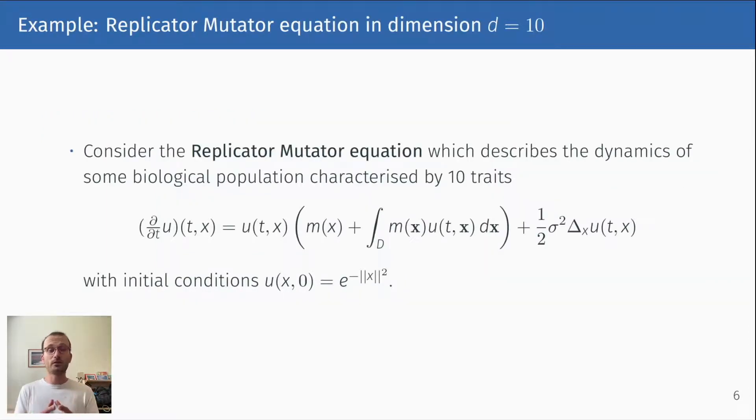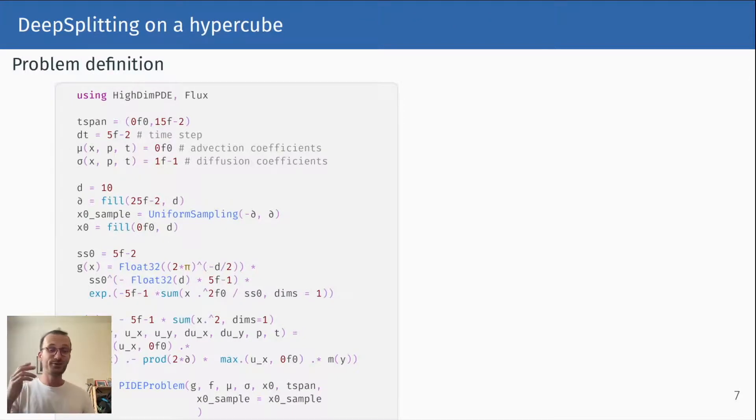Let me walk you through a very easy example to use HighDimPDE.jl. Let's try to solve the replicator-mutator equation, which is a population dynamics equation, in dimension 10. It's pretty easy. You import the package, then you define the timespan, the advection and diffusion part of the PDE. This concerns the domain. This concerns the initial conditions. This defines the non-local, non-linear part of the PDE. And off you go, you can define the PDE problem.